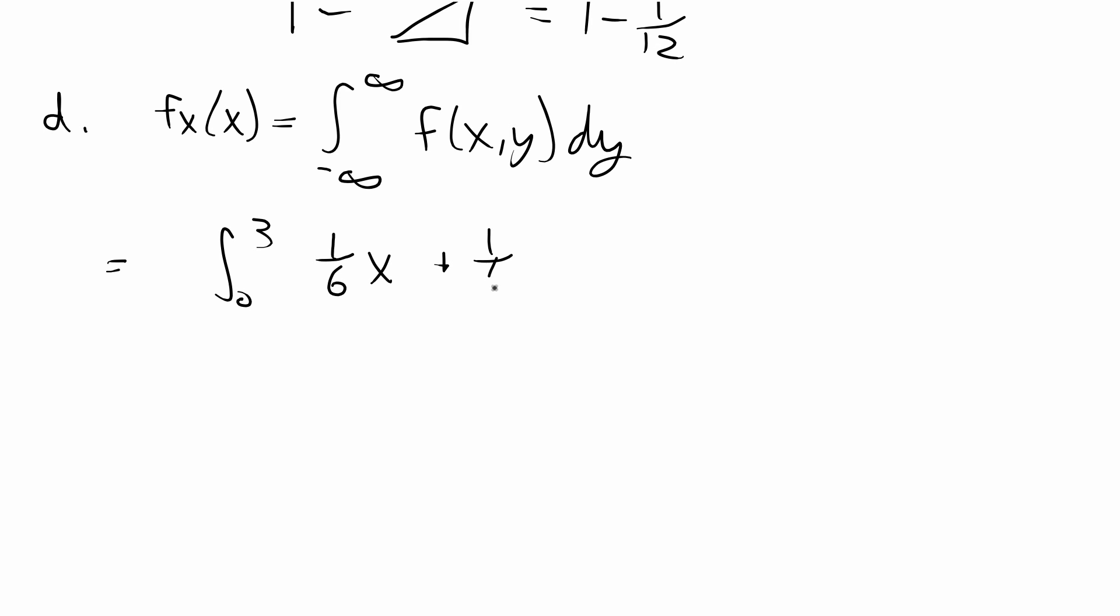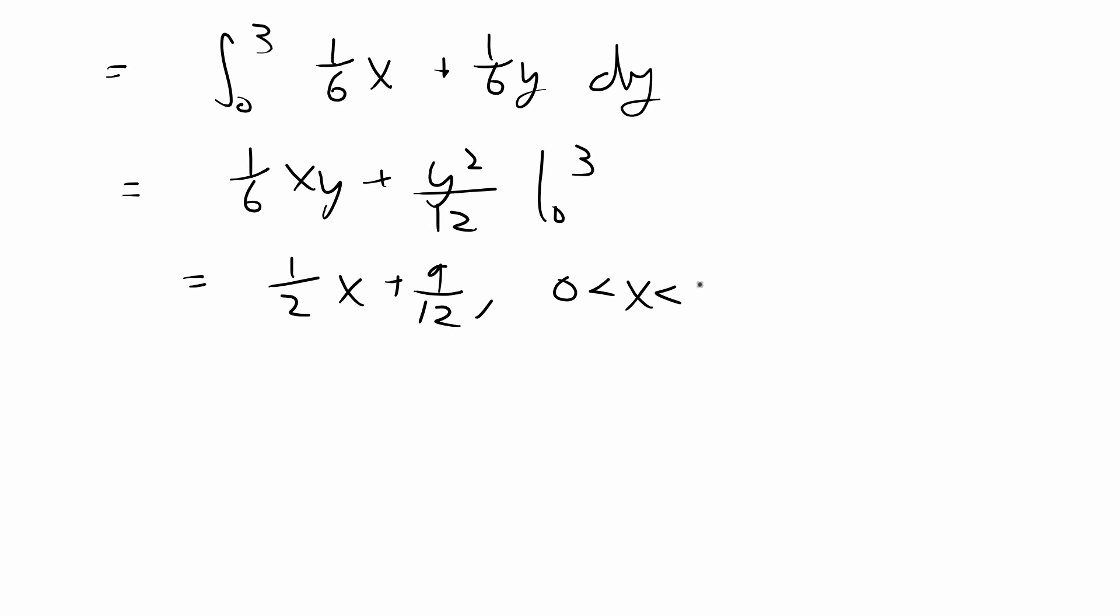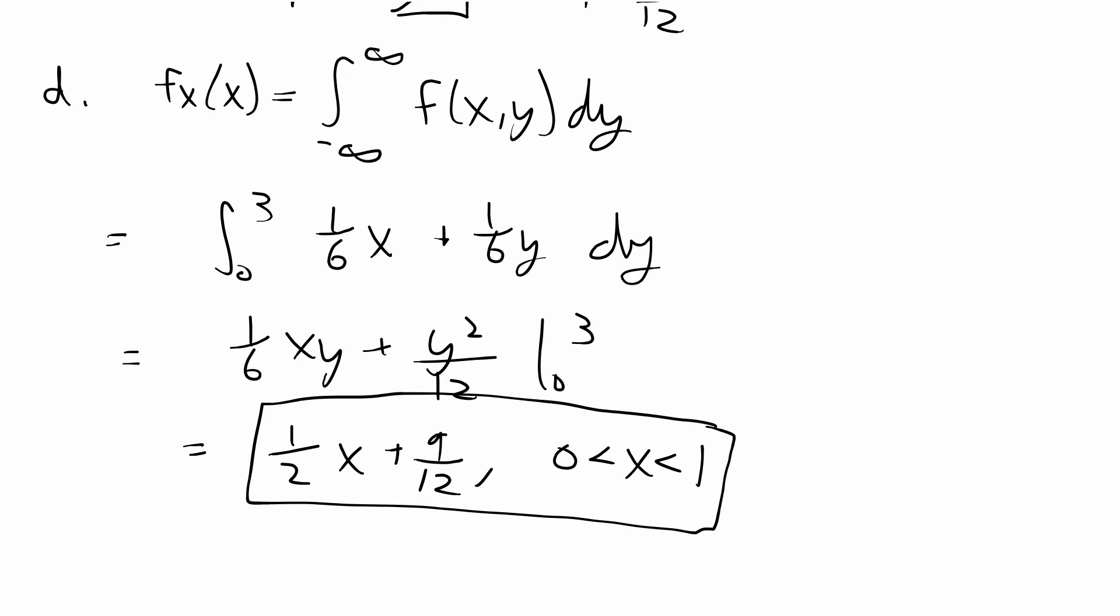That was (1/6)x + (1/6)y dy. That is going to give us (1/6)xy + y²/12 from 0 to 3. When we plug that in, we're going to get (1/2)x + 9/12 and this is over the existence of x, so x is from 0 to 1. We do have to include that as part of our answer and we're done with D.